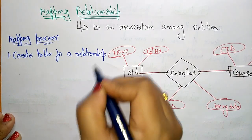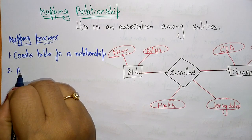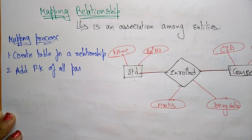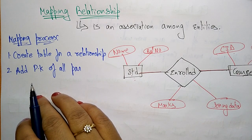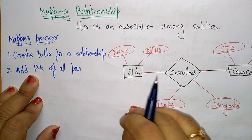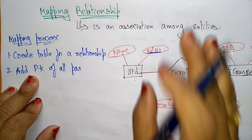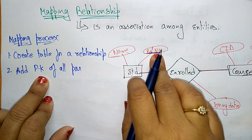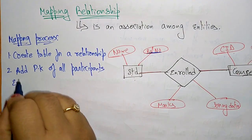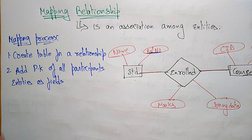Create a table for the relationship — that is, for 'enrolled'. In the previous step, I first created a table for an entity. Now, you have to create a table for the relationship. After that, you have to add the primary key of all participating entities as fields. The primary key is a unique key given to a particular person. For example, the roll number is a primary key — each student has only one roll number, different from any other person. So you add the primary key of all participating entities as fields, with their respective data types.